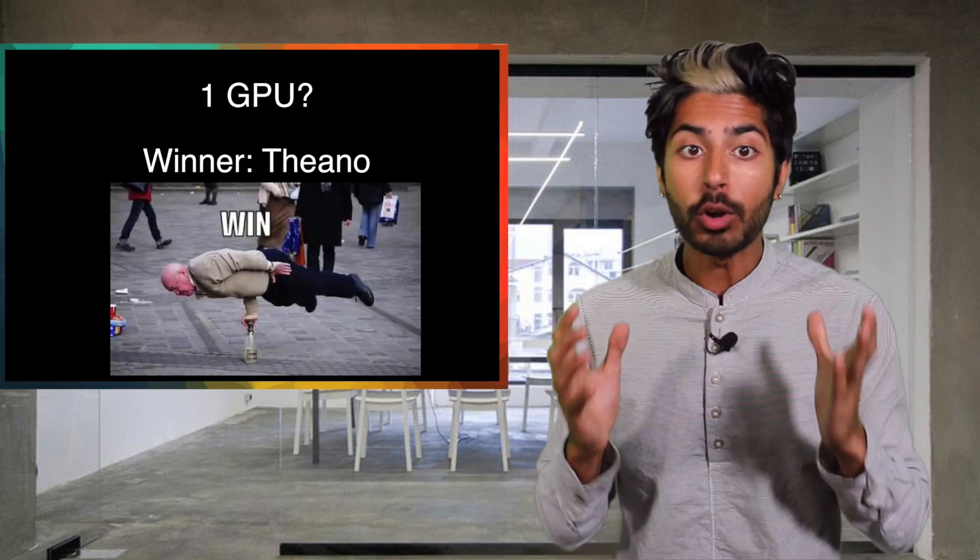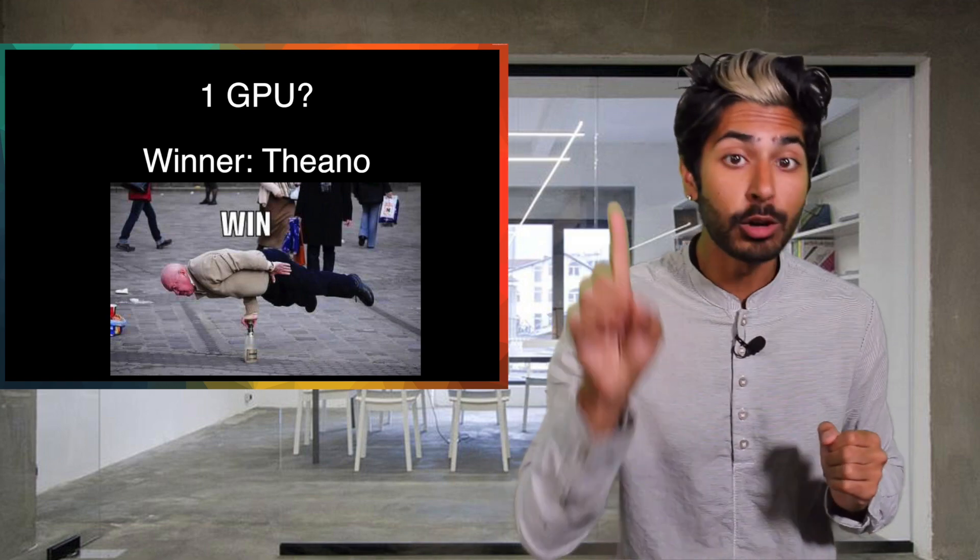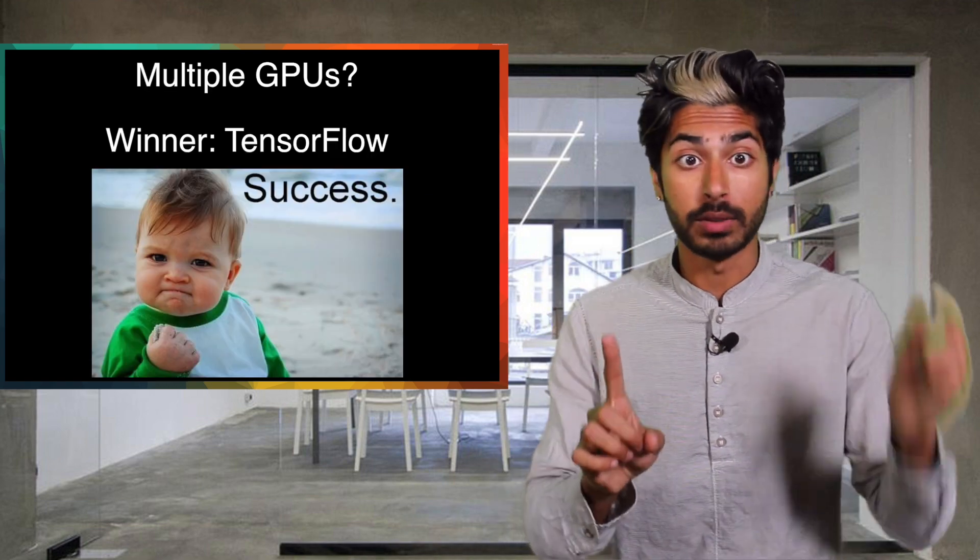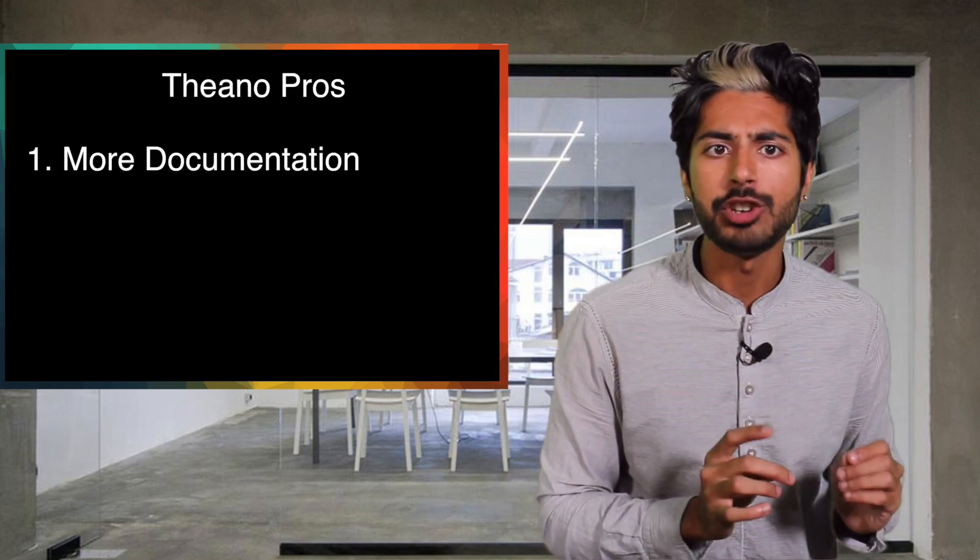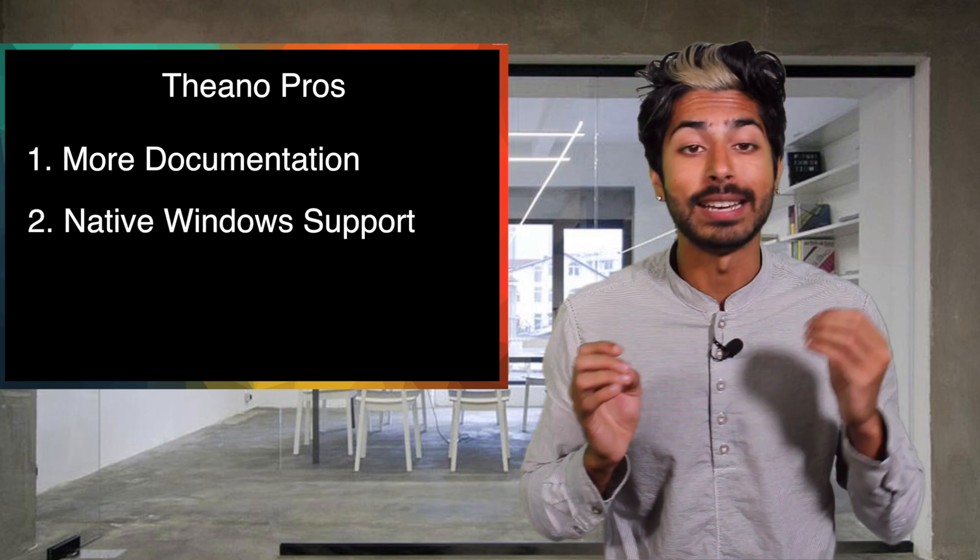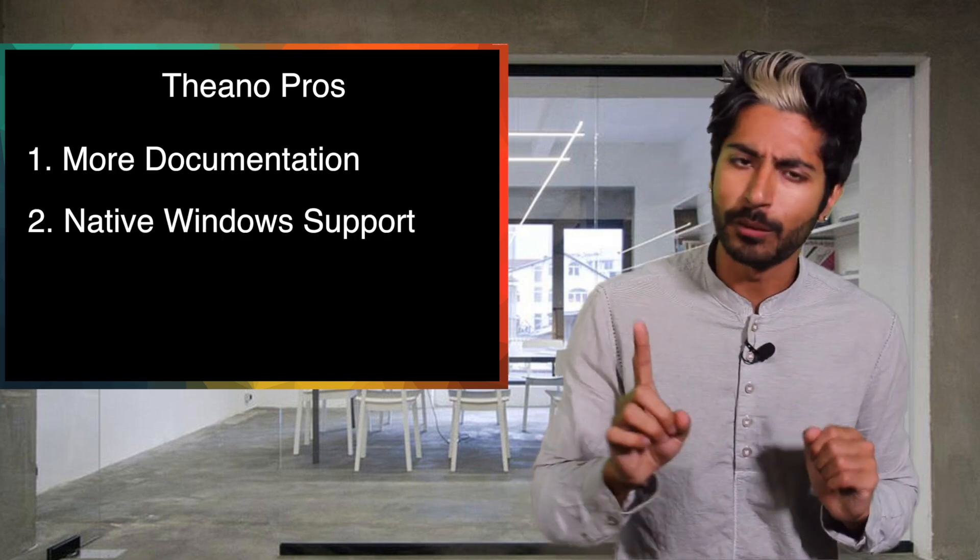The two frameworks that are neck and neck right now, in the race to be the best library for both research and industry, are TensorFlow and Theano. Theano currently outperforms TensorFlow on a single GPU, but TensorFlow outperforms Theano for parallel execution across multiple GPUs. Theano's got more documentation because it's been around for a while, and it's got native Windows support, which TensorFlow doesn't yet. Damn it Windows!